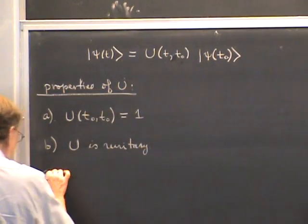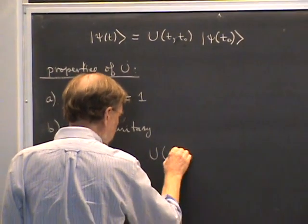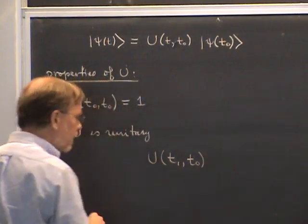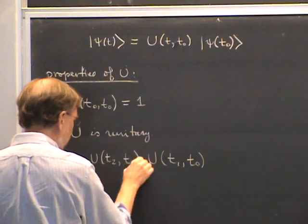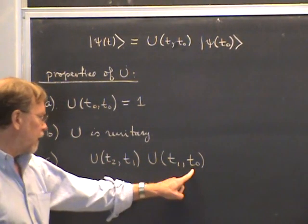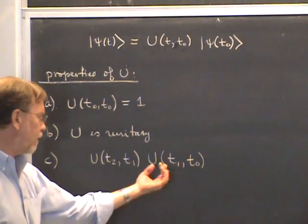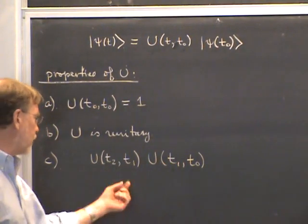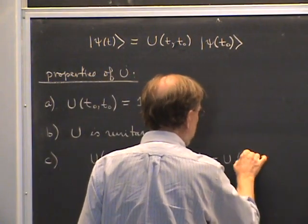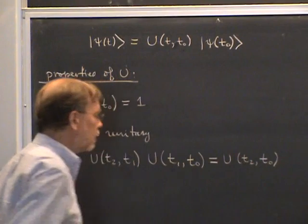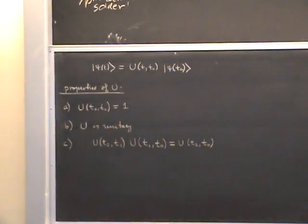The third property we require of U is a composition property. It says that U(t1, t0) multiplied by U(t2, t1) — corresponding to starting at t0, evolving to t1, then taking that state as the new initial condition and evolving to t2 — must give the same result as going straight from t0 to t2, which is U(t2, t0). It's a plausible property.